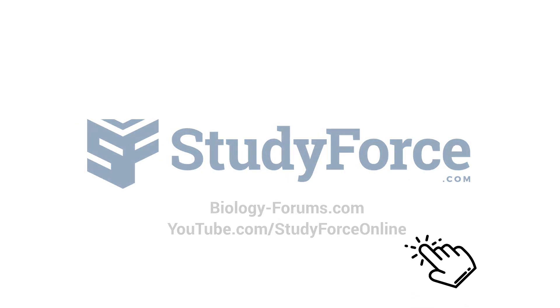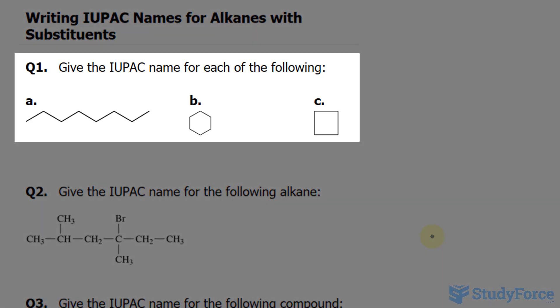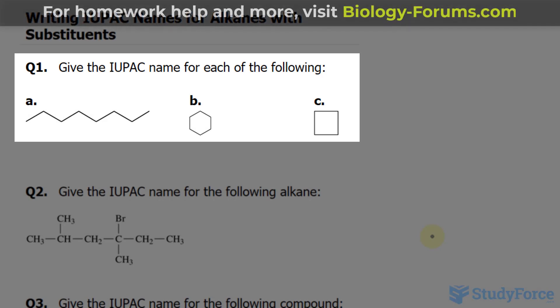In this lesson, I'll teach you how to write IUPAC names for alkanes with substituents. We're going to start off with some easy examples. In question number one, we're asked: give the IUPAC name for each of the following.